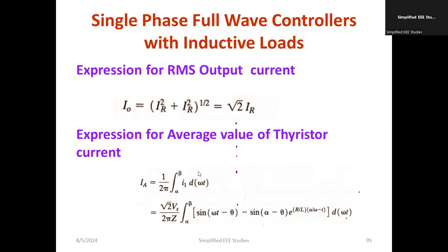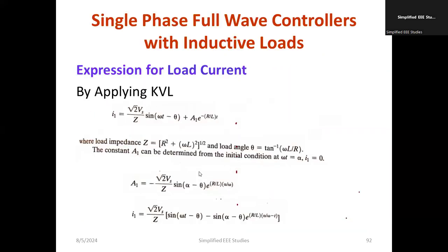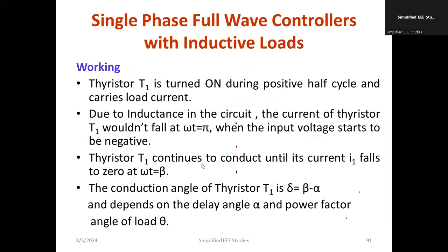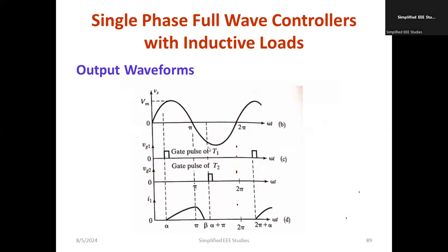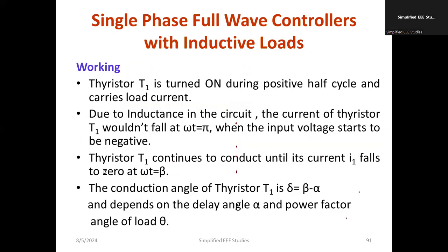The expression for the average value of thyristor current is given by (1 divided by 2pi) times the integral from alpha to beta of I1 d(omega-t). In this video I discussed how a single phase controller operates with inductive load, the differences between inductive and resistive load, the output stage behavior, the gating pattern, and the delay angle.